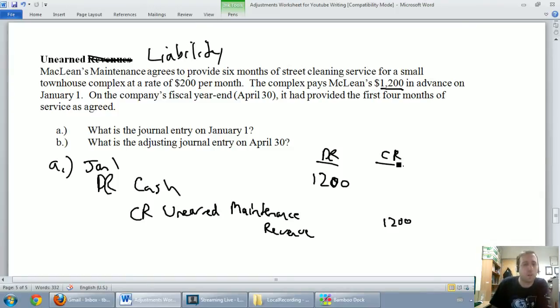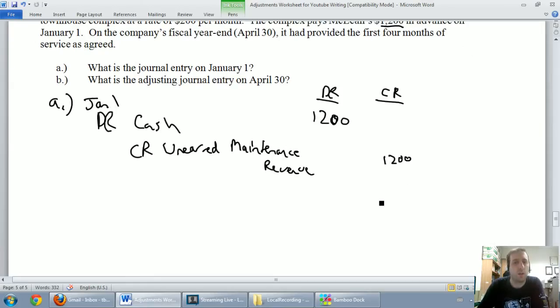So this journal entry was a transaction. We transacted some business. They gave us money. We recorded a journal entry. The B part of this is our adjusting journal entry. So let's move on to B.